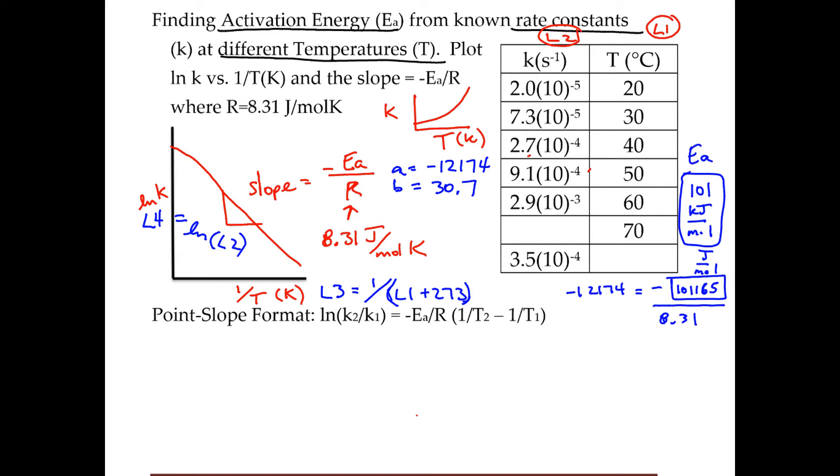So we got the activation energy. But now we need to do a fill in the blank. A fill in the blank is going to be how do we find this answer right here. So we're going to go back to our line equation. And we know that Y equals AX plus B. So the Y is the ln of K. The A is the slope, which the calculator told us, negative 12,174. The X is going to be 1 over temperature in Kelvin. And the intercept the calculator told us was 30.7.